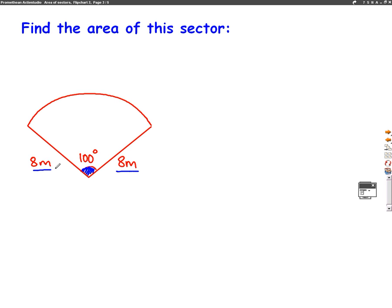So let's start by thinking about what fraction of a circle we have. Well, we have 100 degrees out of a whole circle, which is 360 degrees. So we have 100 out of 360. That's what fraction of the circle we have.